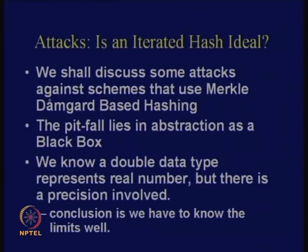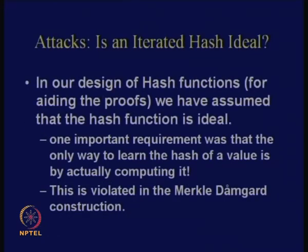You cannot actually express all possible real numbers. If you keep these limits in mind then it is fine, but it is very important to understand these limits. We will see certain attacks in order to understand really where the proofs fail. In our design of the hash function and the proofs, we assumed that the hash function is ideal. One important requirement was that in order to learn the value of a hash, the only way was to compute it — previous knowledge was not helping in computing a new hash value. This particular fact is exactly violated in the Merkle-Damgård construction.